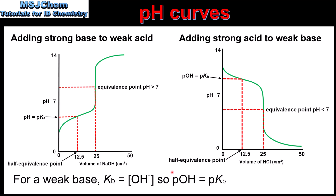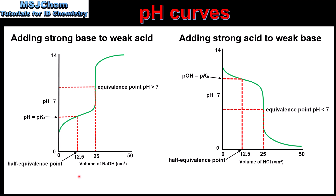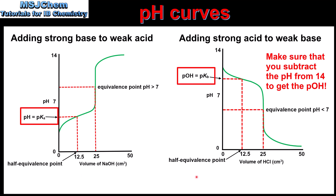For a weak base, Kb is equal to the concentration of hydroxide ions in solution. Taking the negative log of both gives pOH equals pKb. To summarize: for a weak acid at the half equivalence point, pH equals pKa; for a weak base at the half equivalence point, pOH equals pKb. To determine these values, draw a line up from the half equivalence point to where it meets the pH curve, then draw a line across to the y-axis. For a weak acid this gives the pKa, and for a weak base this gives the pKb.